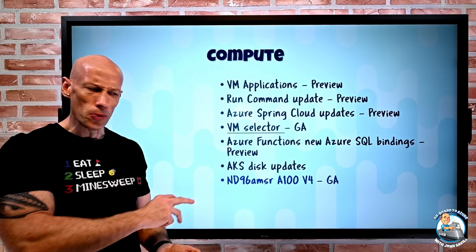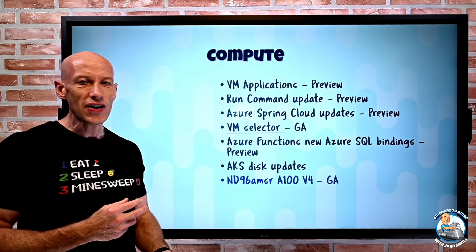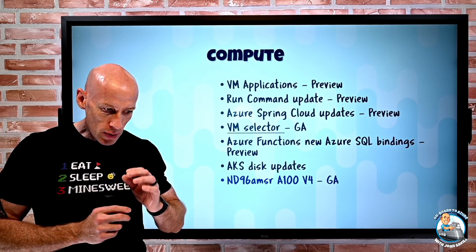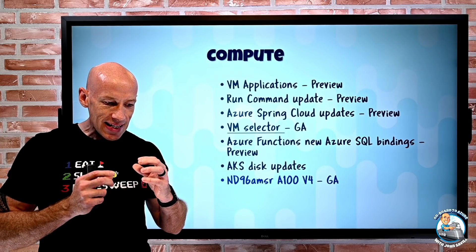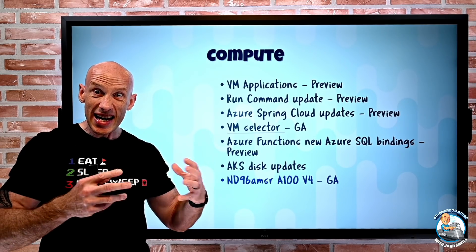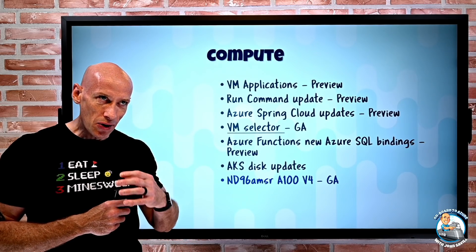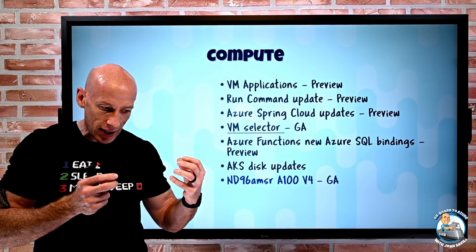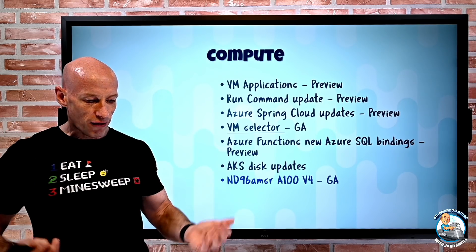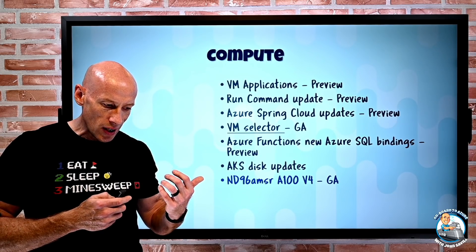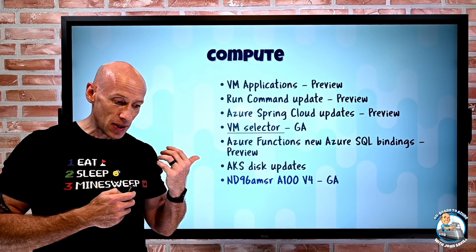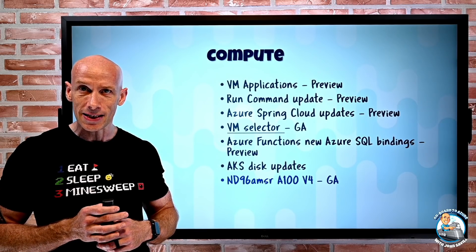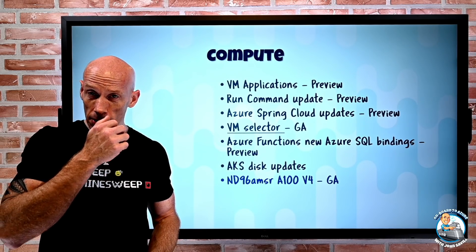There's a new SKU, the ND96AMSRA100V4, now GA. This is built around AI supercomputer scale using NVIDIA A100 Tensor Cores with 80 gigabytes of memory per GPU and eight GPUs in this SKU. It has NVIDIA Quantum InfiniBand Networking at 200 gigabytes per second and 40 gigabits per second of regular Azure networking. It features PCI Gen 4 architecture, GPU direct RDMA for each GPU, 1,900 gigabytes of RAM, and 96 CPU cores. These claim some of the top four places in the top 500 supercomputing list.